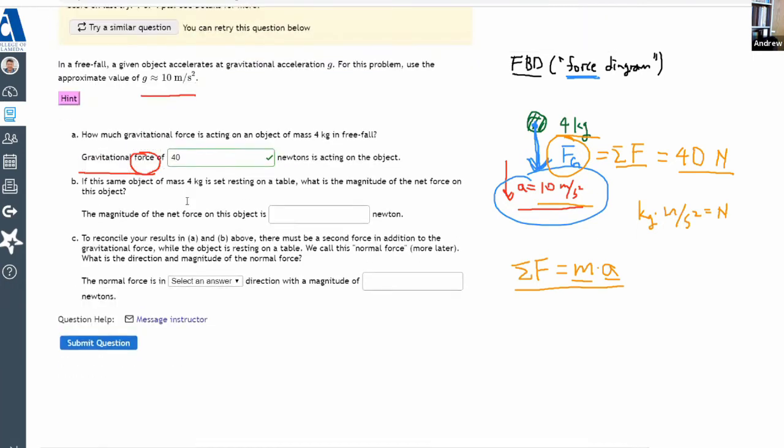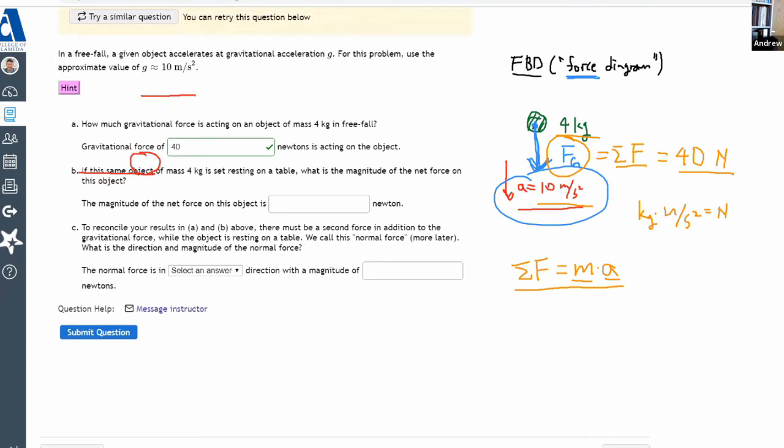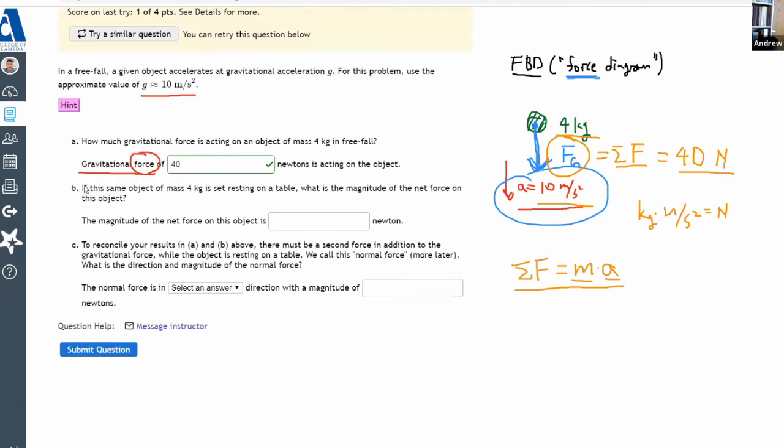Now, having gotten this one right, when it says, if the same object is resting on a table, what is the magnitude of net force on this object? So this is where you have to be careful. You have to realize, oh, my situation is changing.